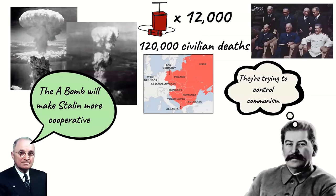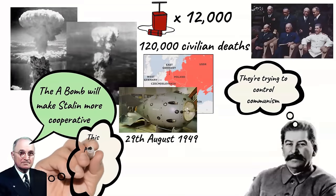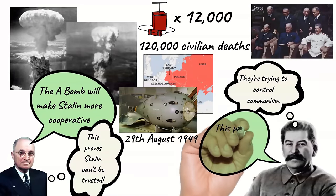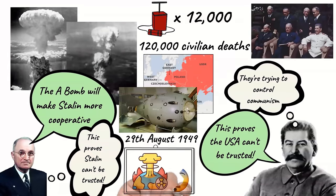Stalin had already ordered scientists from the USSR to begin developing their own atomic bomb, and they tested their first successful bomb on the 29th of August 1949. All the atomic bomb had achieved was to escalate the mistrust and tensions between the two nations. However, in the longer term it did make both sides reluctant to enter into a hot war — they instead entered into an arms race.